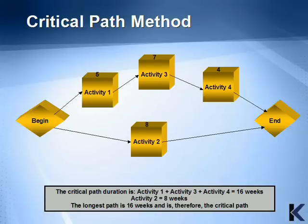This is a diagram of essentially the same calculation, except in graphical form. You can note that activity 3 is still dependent on activity 1 being completed before it can begin, and activity 4 follows activity 3. The calculation is the same — adding activities 1, 3, and 4 gives 16 weeks. Activity 2 is only 8 weeks long. Therefore, the longest path is 16 weeks and is the critical path.